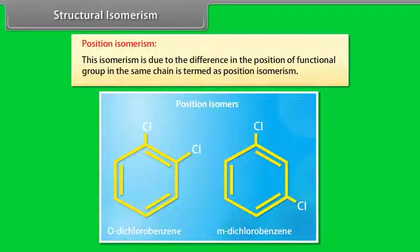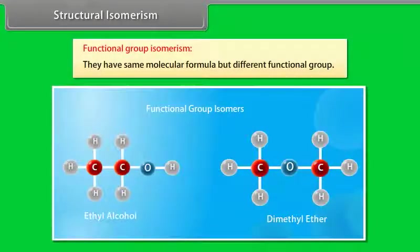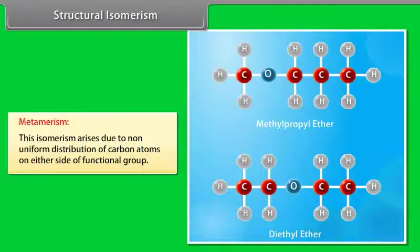Position isomerism arises due to the difference in the position of a functional group in the same chain. Functional group isomers have the same molecular formula but different functional groups. Metamerism arises due to non-uniform distribution of carbon atoms on either side of a functional group — for example, methylpropyl ether and diethyl ether.